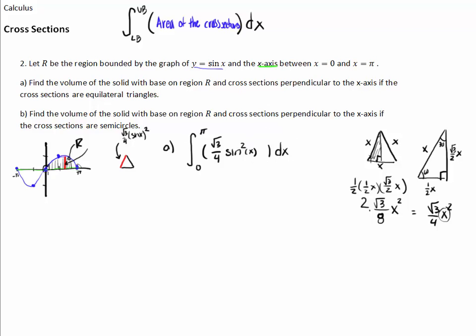That's the formula for finding the volume of this shape where cross-sections are equilateral triangles. Typing that into our calculator, we get 0.6801, so 0.680 is our answer to part A.